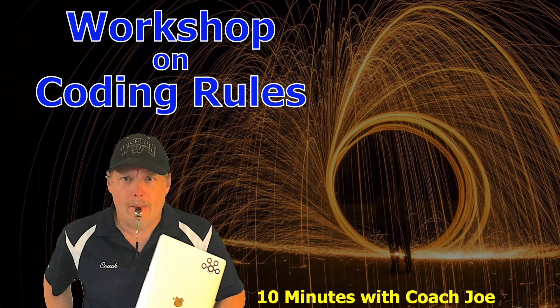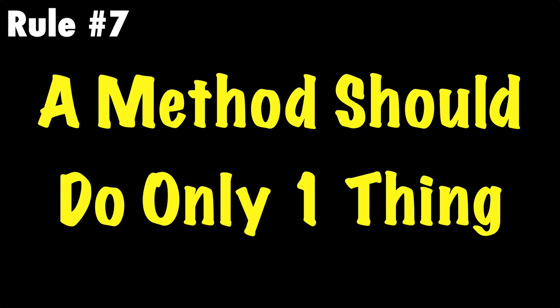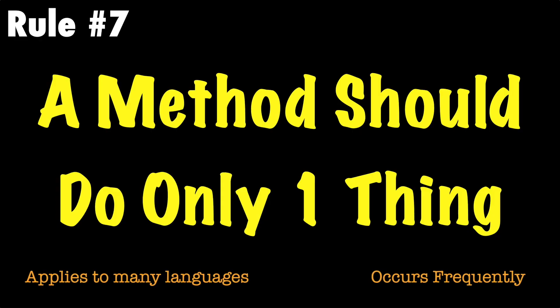Welcome class to a workshop on Coach Joe rules. In this lesson, we will review Coach Joe rule number seven, which states: a method should do only one thing.